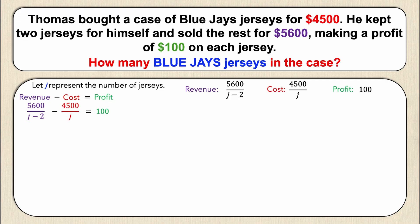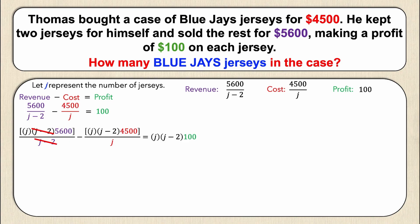I'll keep the color coding for this next line so you can see where everything goes. Multiplying everything by j times (j minus two): the first term becomes j times (j minus two) times 5600 over (j minus two); the second term is the same multiplied by 4500 over j; and the last term is j times (j minus two) times 100. The denominators cancel — the (j minus two)'s cancel in the first fraction, and the j's cancel in the second — leaving j times 5600 minus (j minus 2) times 4500 equals j times (j minus 2) times 100.